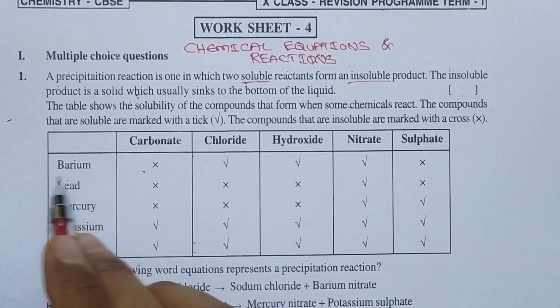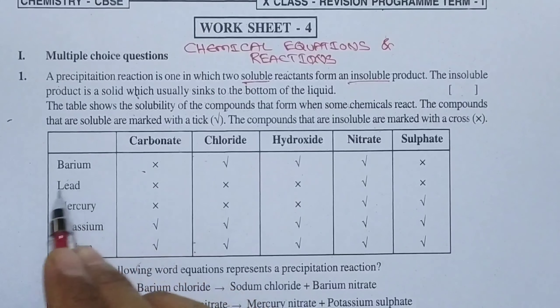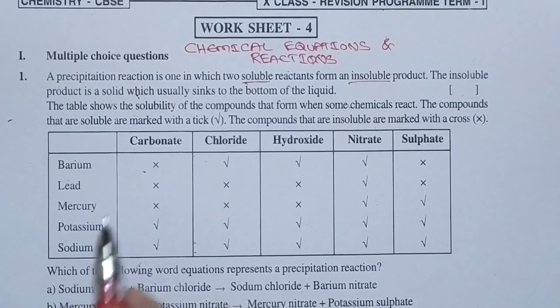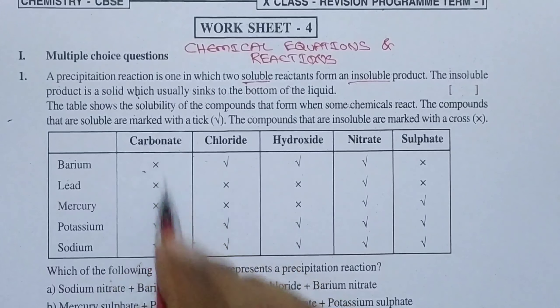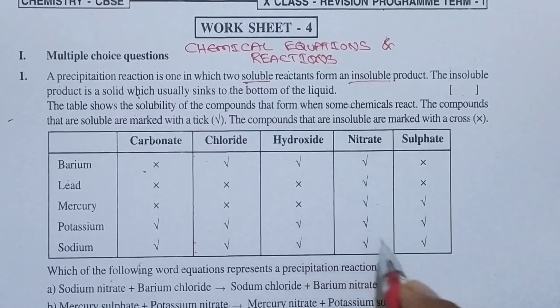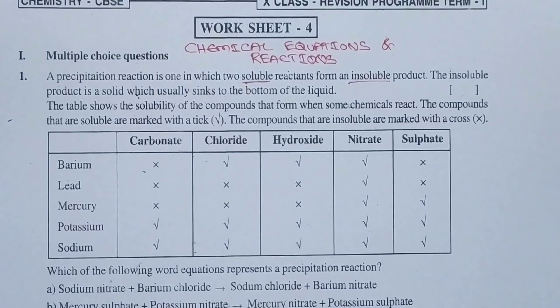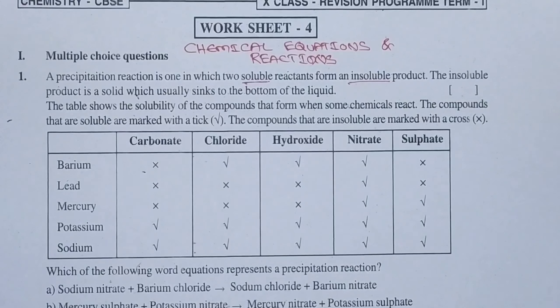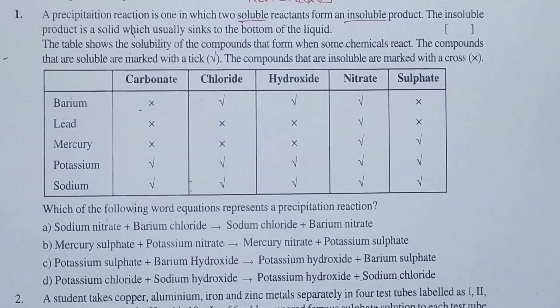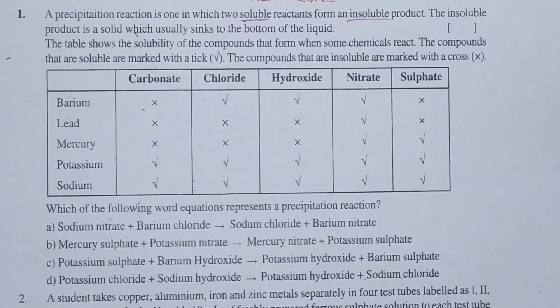Now let us see here — certain elements given are barium, lead, mercury, potassium, sodium, and the compounds are carbonates, chlorates, hydroxide, nitrate, and sulphate. Certain questions are there based on this table; let us answer them.